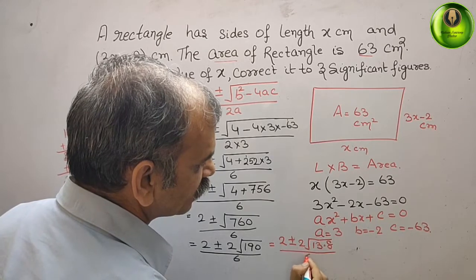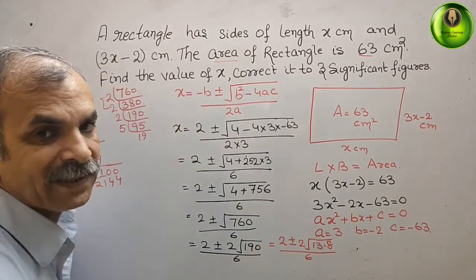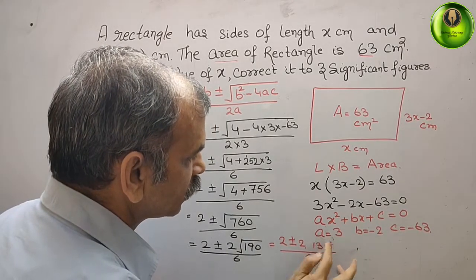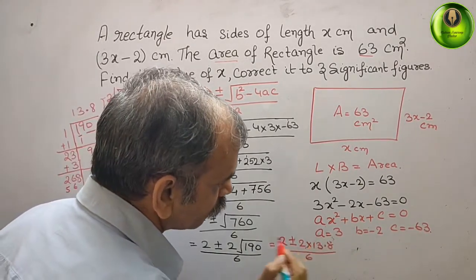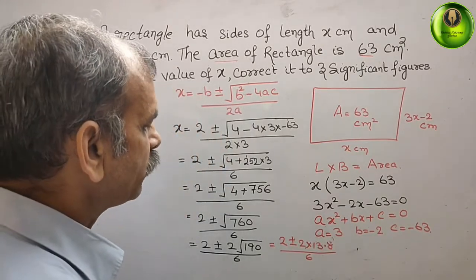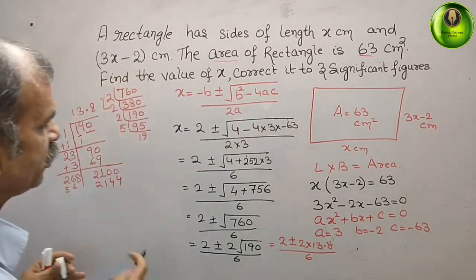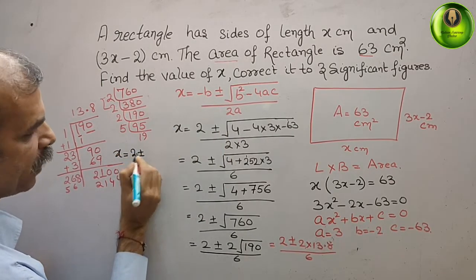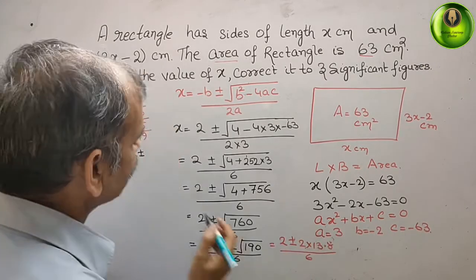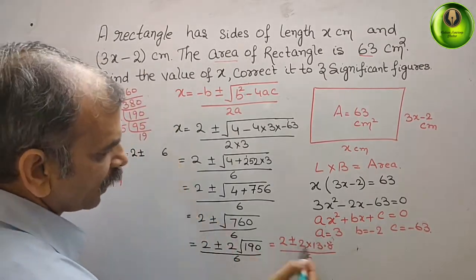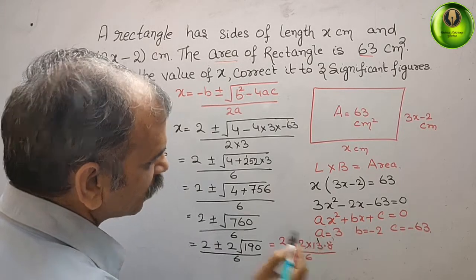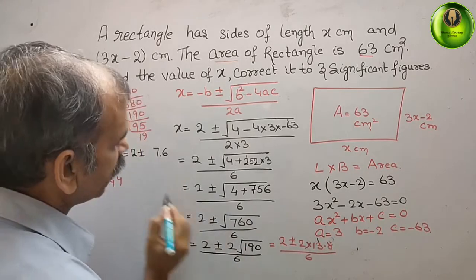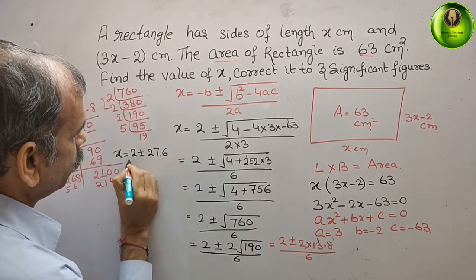By 6. Now. Sorry. This is multiplication. Now. So, what is the value? We will get x is equal to, x is equal to, 2 plus and minus. Now, multiply 2 into 8 is 16. 1 carry. 2 into 3 is 6. Plus 1 is 7. And point is here. 2 into 1 is 2. By 6.